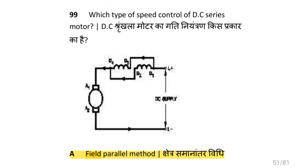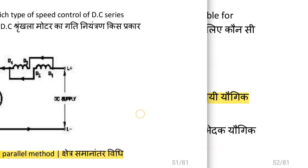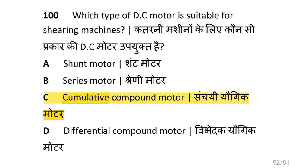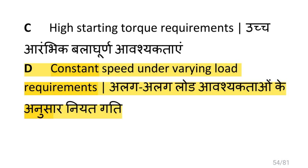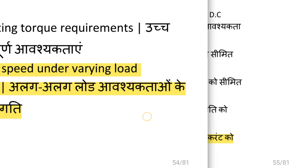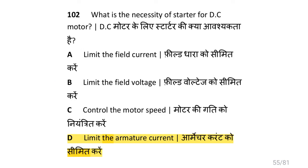Which type of speed control is used for DC series motor? That is the field parallel method. Which type of DC motor is suitable for shearing machines? That is cumulative compound motor. Where is DC compound motor preferred? That is for constant speed under varying load. What is the necessity of a starter for DC motor? That is to limit the armature current.